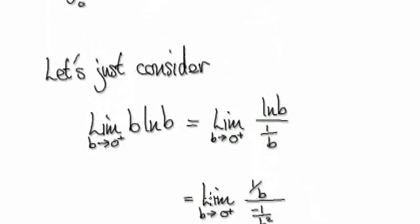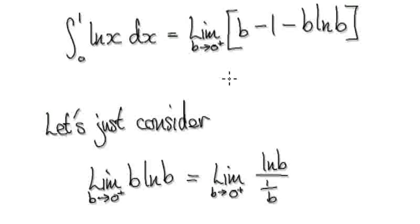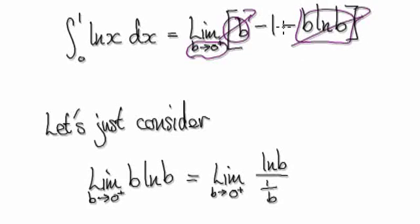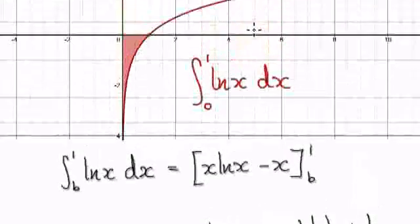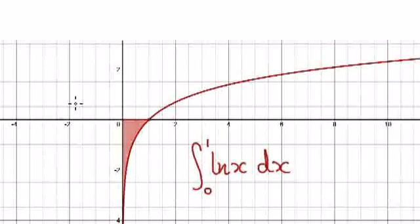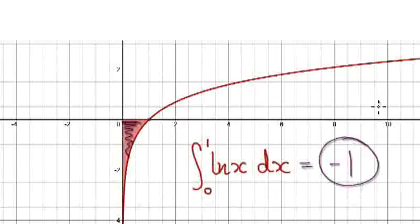Going back: as b heads towards 0 from the right-hand side, this term is going to be 0, this term is going to be 0, and your leftover result is minus 1. So the final answer is minus 1. This whole area from 0 to 1 is negative 1 — that is your final answer.